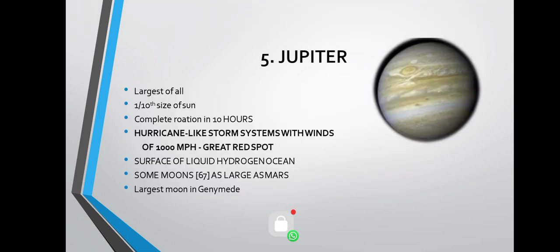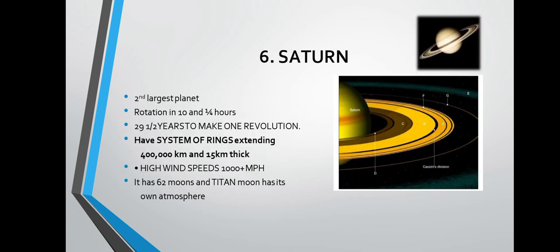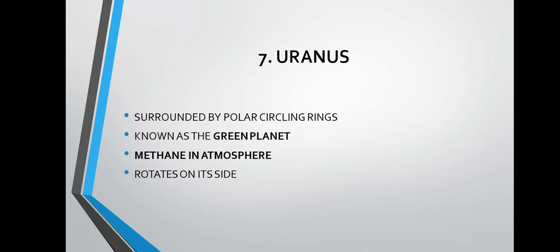Jupiter is the largest of all the planets and one-tenth the size of the sun. It completes its rotation in 10 hours and its largest moon is Ganymede. Saturn is the second largest planet, with a rotation of about 10 and a quarter hours. It has 62 moons, and its moon named Titan has its own atmosphere.